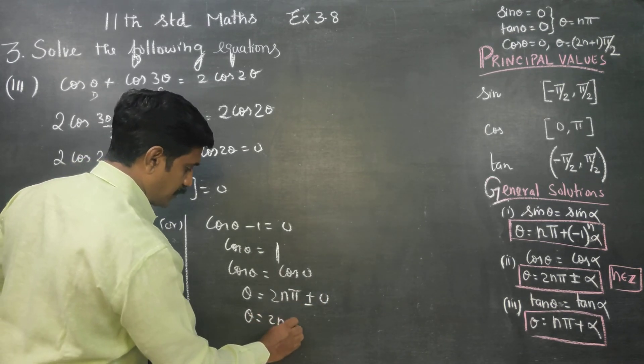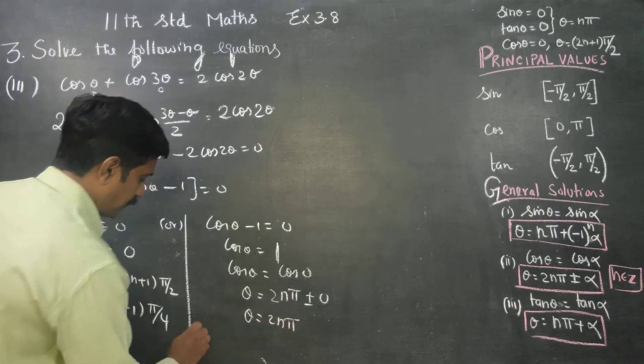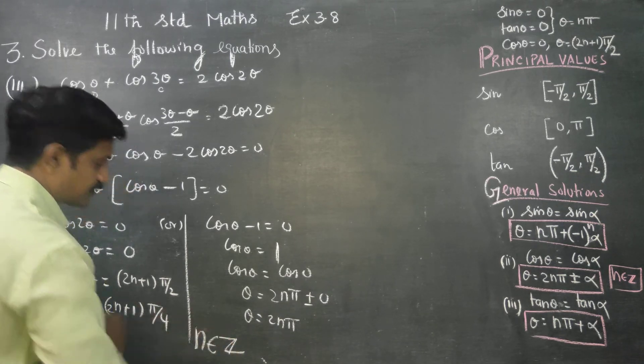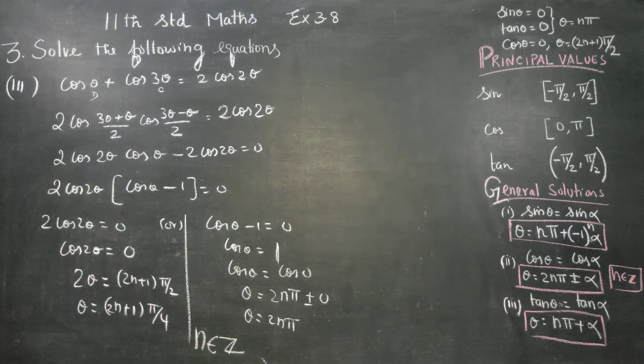The solution is theta equal to 2n pi, where n belongs to integers.